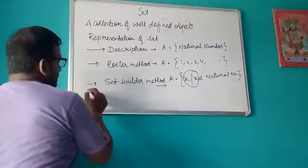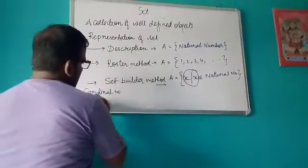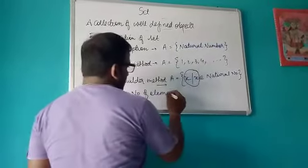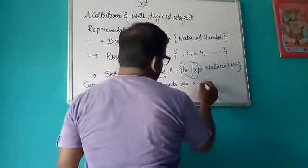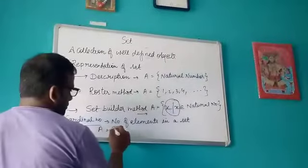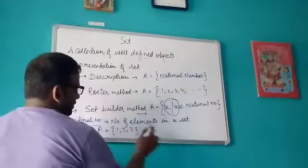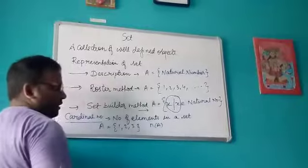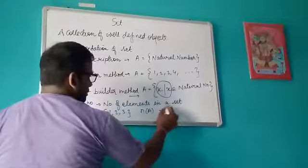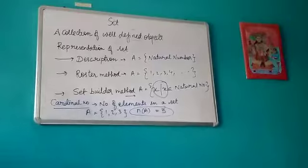Now let's talk about cardinal number. Cardinal number means the number of elements in a set. For example, if a set contains {1, 2, 3}, it has three elements. We denote the cardinal number in brackets with the set name equal to three. That is the meaning of the cardinal number of a set.